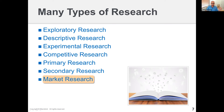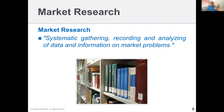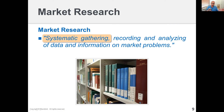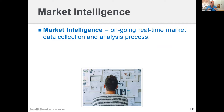We're going to focus on market research. Market research, as defined in PMTK in relation to product management, is the systematic gathering, recording, and analyzing of data and information on market problems — those problems that will be answered with features or products. The key word is systematic: there's somebody constantly at the company with their hand on the pulse of the market, gathering and analyzing information. This process is called market intelligence — market research that's constantly being done, ongoing, all the time, in real time.